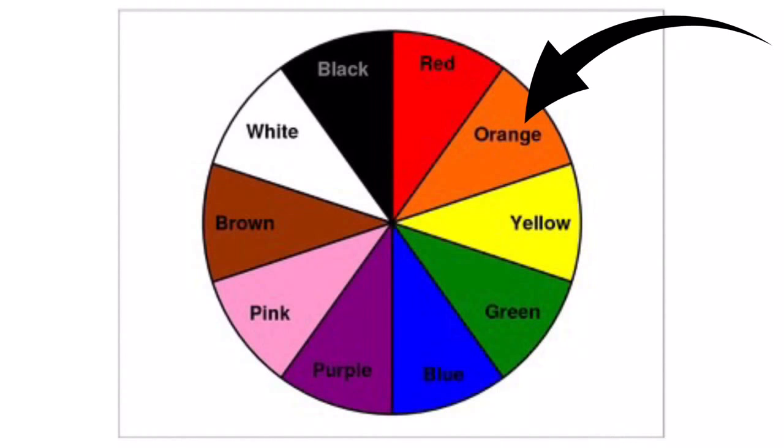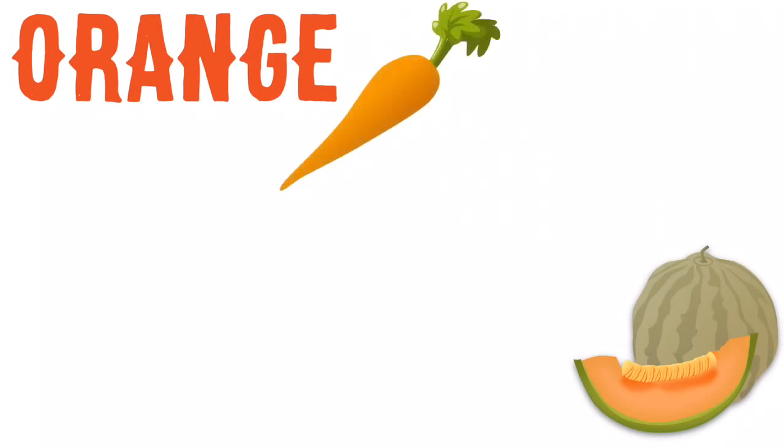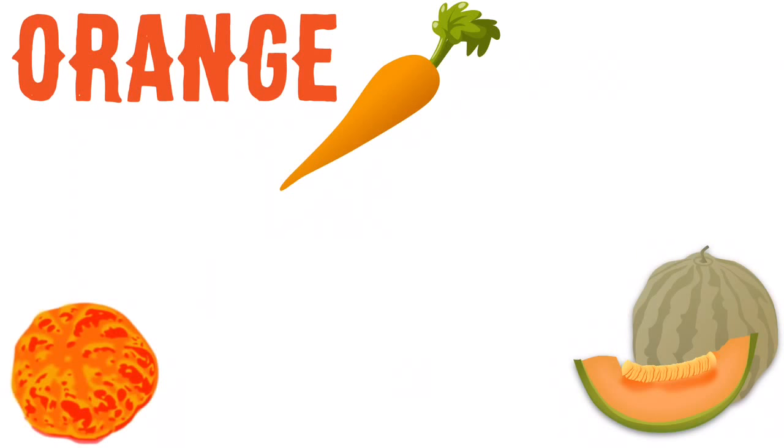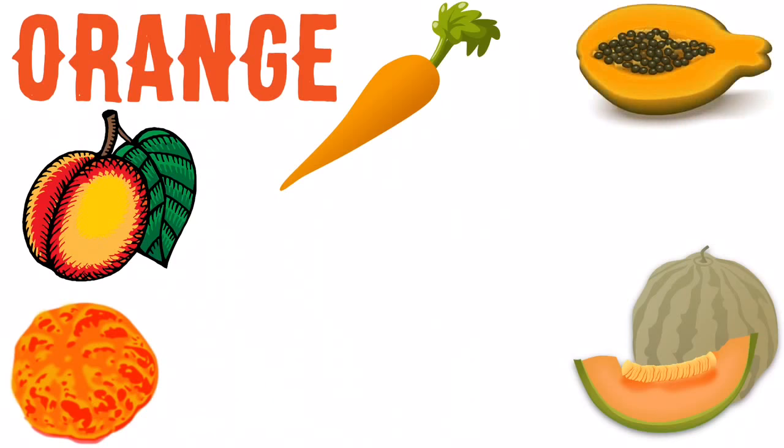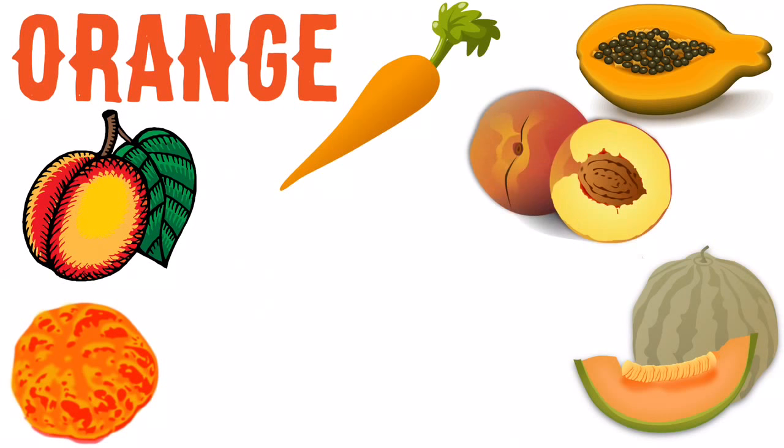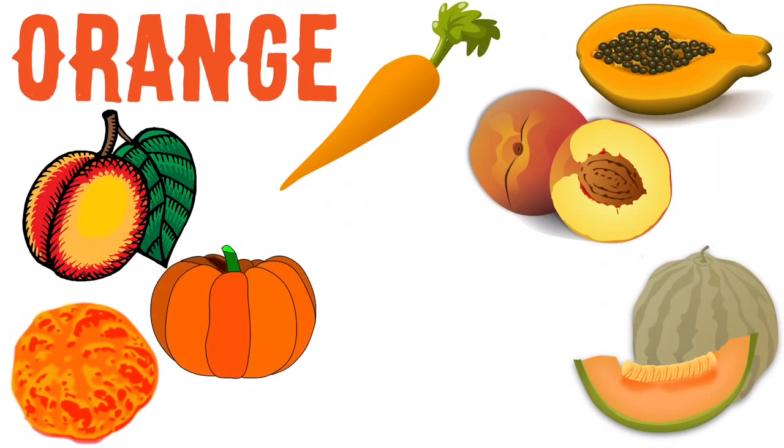This color is orange. Which fruits and vegetables are orange? Orange, cantaloupe, carrot, tangerine, apricot, papaya, nectarine, pumpkin.